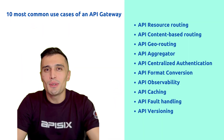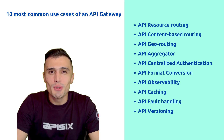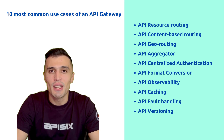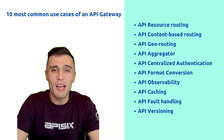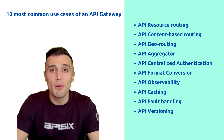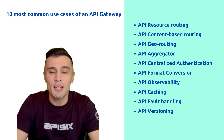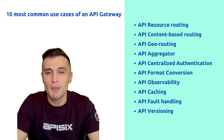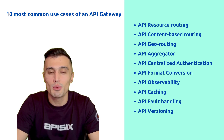Throughout the video we described some of the use cases of API Gateway in designing API-led architectures — how the API Gateway handles authentication, transformation, aggregation, caching, and observability, and how it can be applied to route access to multiple backend endpoints. However, there are many other use cases you might think of. You can check out the Apache APISIX website to learn more about these use cases.